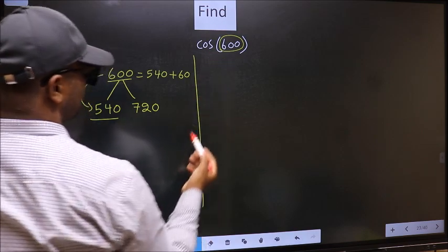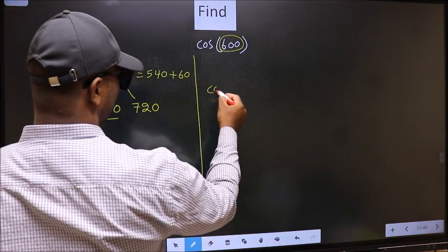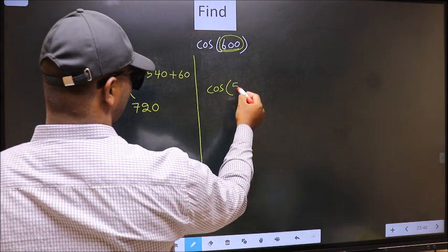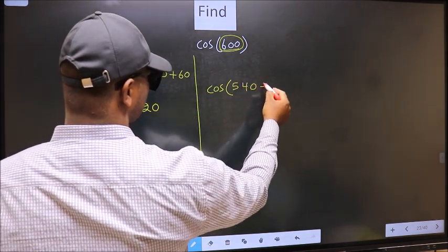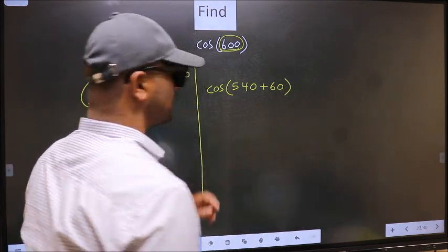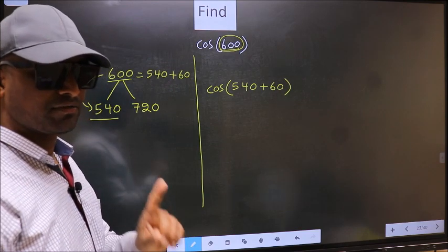So, this will become cos. In place of this, now we write this: 540 plus 60. This is your step 1.